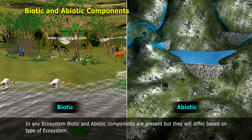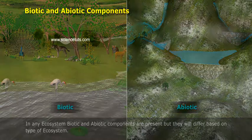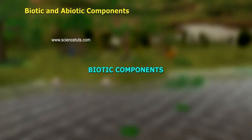biotic and abiotic components are present, but they will differ based on the type of ecosystem. Biotic components include producers, consumers, and decomposers.